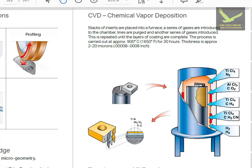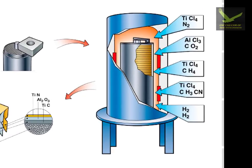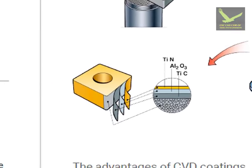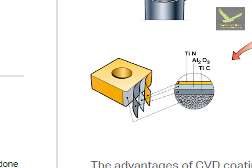In the CVD (Chemical Vapor Deposition) method, a furnace is used in which inserts are placed and different types of gases are passed through — such as nitrogen, CO2, methane, and hydrogen.